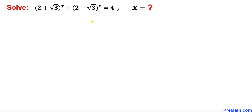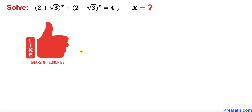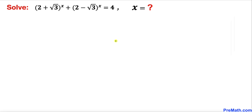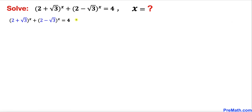Welcome to pre-math. In this video we are going to solve the given exponential equation: (2 plus square root of 3) to the power x plus (2 minus square root of 3) to the power x equals 4. Let's go ahead and get started with the solution. Let's focus on this given exponential equation.